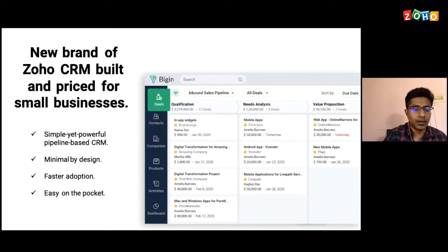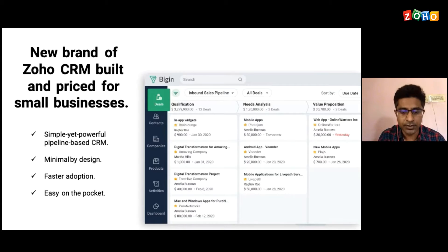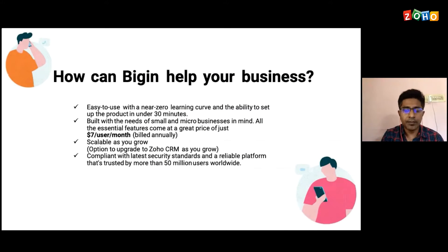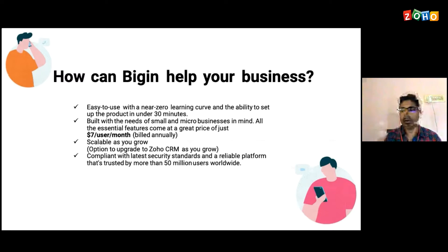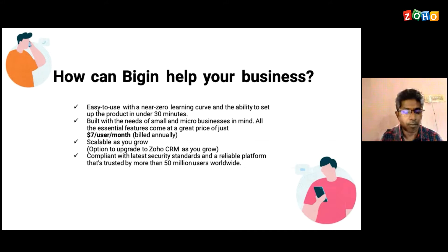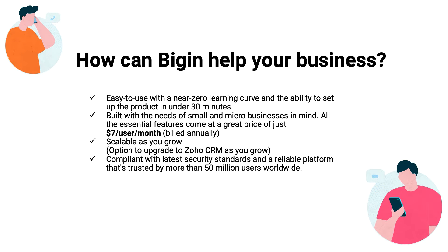As you can see, it is a pipeline-centric CRM, very minimal in design, which makes it easier for adoption. It's very easy on the pocket as well — probably the easiest one in the market today. The user interface and overall design of Zoho Bigin is very simple, which means you will have almost near zero learning curve. As soon as you sign up with the product, within 30 minutes you'll be able to set up and start working with it. It is also scalable — as your business grows and if you need more features, you can always upgrade to Zoho CRM, and you don't have to worry about the data, as we are compliant with all the latest security standards.